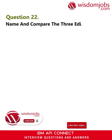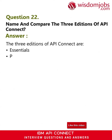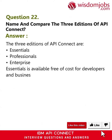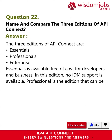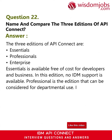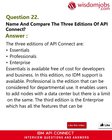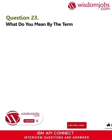Question 22: Name and compare the three editions of API Connect. Answer: The three editions are Essentials, Professional, and Enterprise. Essentials is available free of cost for developers and businesses, but no IDM support is available. Professional is the edition for departmental use — it enables users to add nodes within a data center, but there is a limit. The third edition, Enterprise, has all the features and can be accessed anytime, with full IBM support available at all times.